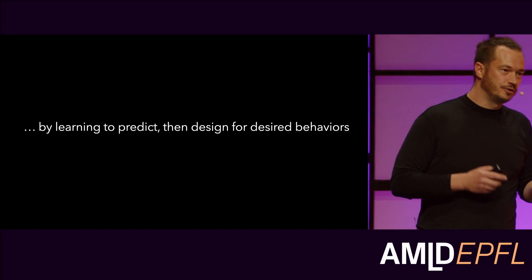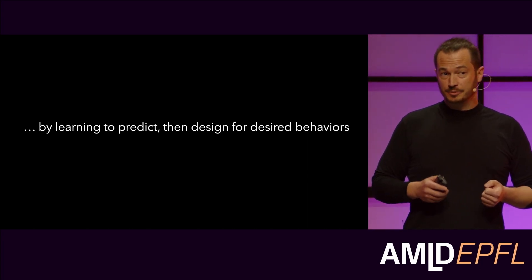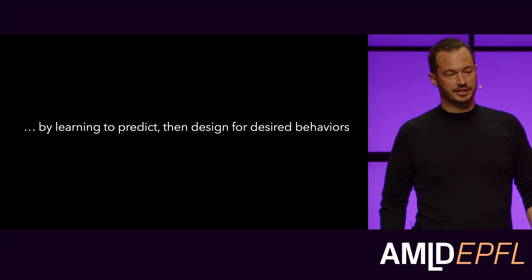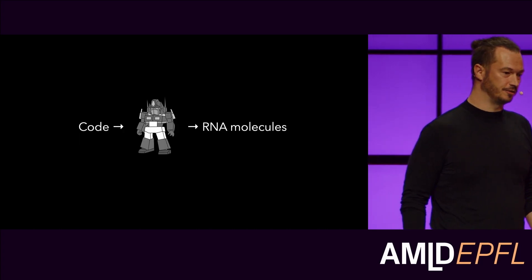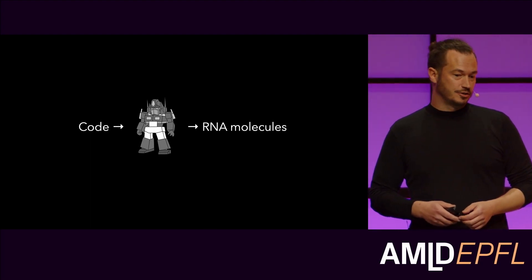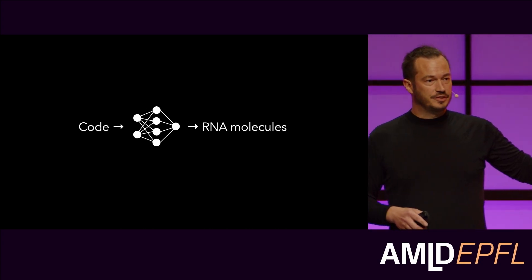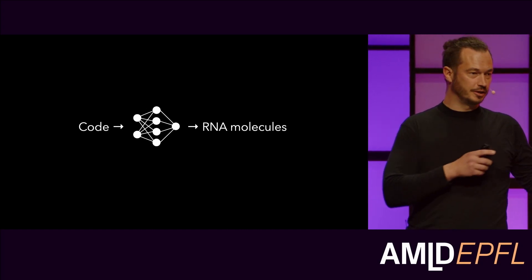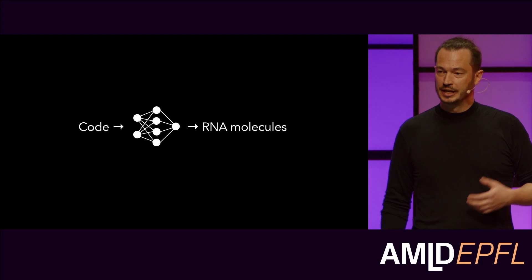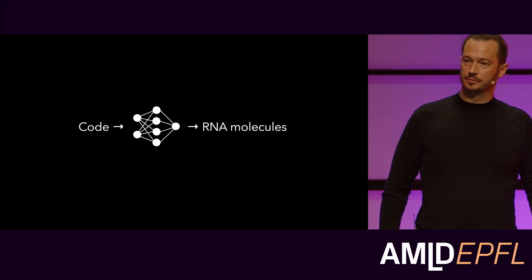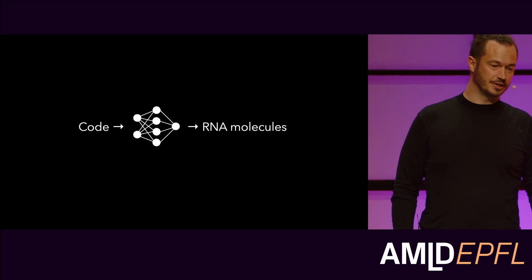We want to do this in a way that is different than what these examples suggest. We don't want to Frankenstein together a piece of virus and a chunk of mRNA vaccine and try it a bunch of different ways and hope it works out. We would actually like to learn to predict these behaviors — sufficiently well and precisely and reliably that we can use that capability to actually design for the desired behaviors. Where we want to get is to train very large neural networks that are given some specification of desired behavior and that generate descriptions of RNA molecules that, when they end up in your cells, actually exhibit the desired behavior.